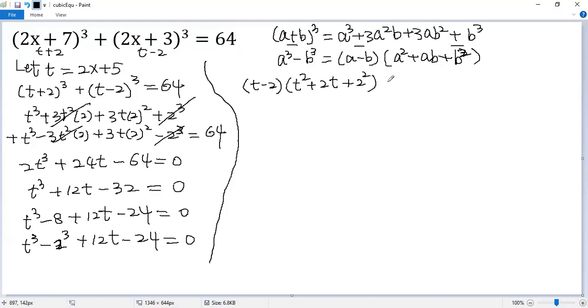For the second two terms, take the common factor 12 out. So we get (t-2)(t² + 2t + 4 + 12). Actually plus 16 equals 0.